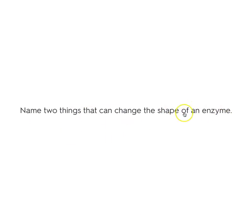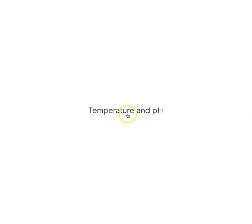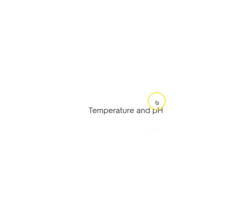Name two things that can change the shape of an enzyme. If the shape of an enzyme changes, it no longer works. Temperature can change the shape of an enzyme. pH can also change the shape of an enzyme. If it's in the wrong pH or wrong temperature, the enzyme can denature.